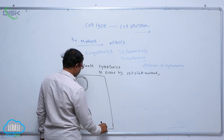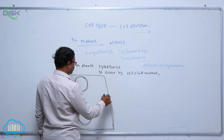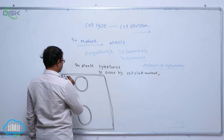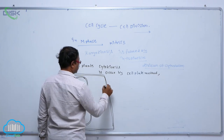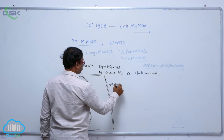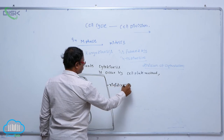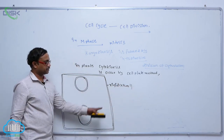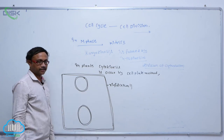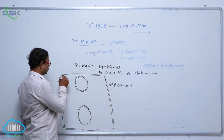A furrow is not formed in the plant cell because a rigid cell wall is present. A rigid cell wall means a strong cell wall, and that is why a furrow is not formed in the cell membrane of plant cells.